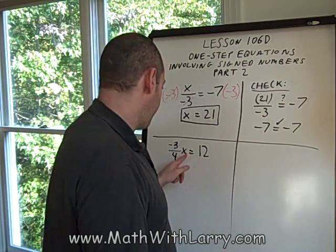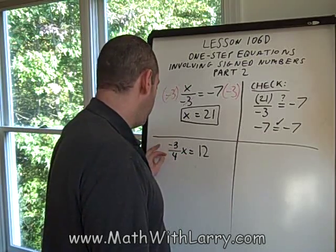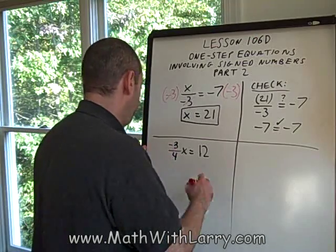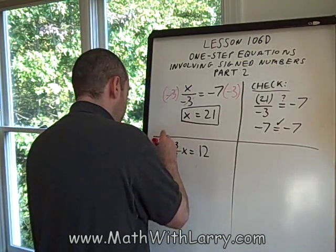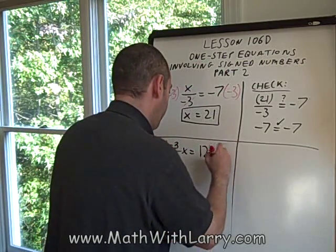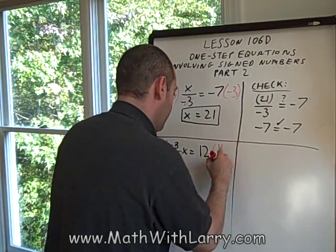Now recall from a previous lesson that the best way to handle this is to multiply both sides by the reciprocal of this fraction. So the reciprocal of negative 3 over 4 is simply 4 over negative 3. And immediately do the same thing to the other side: 4 over negative 3.